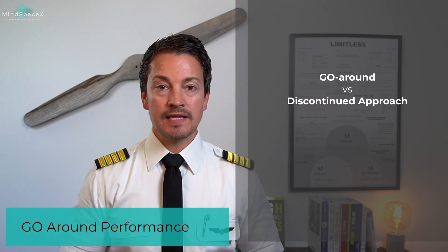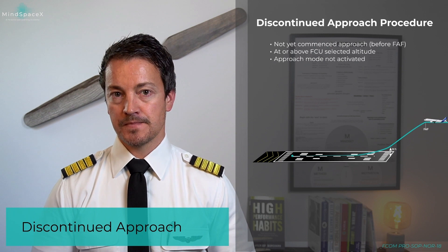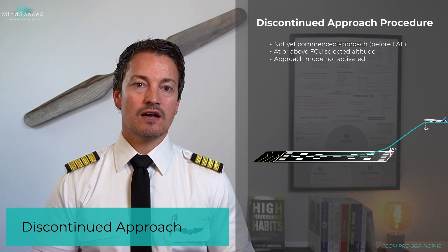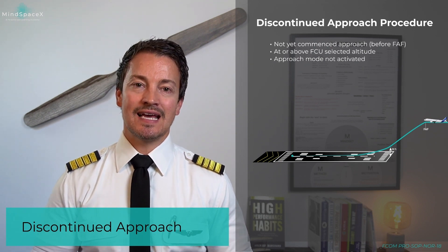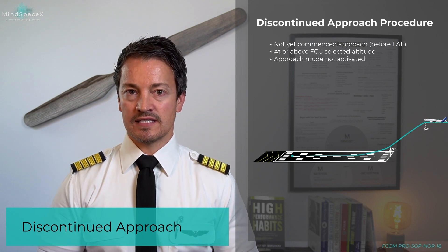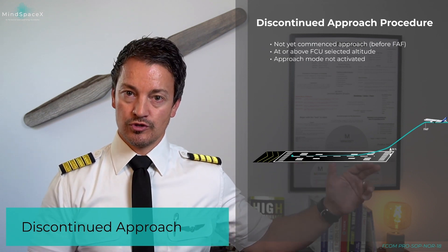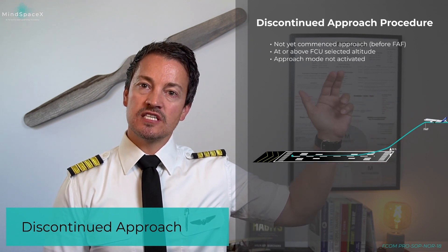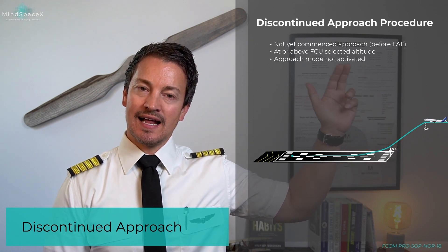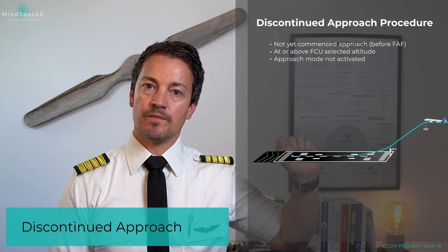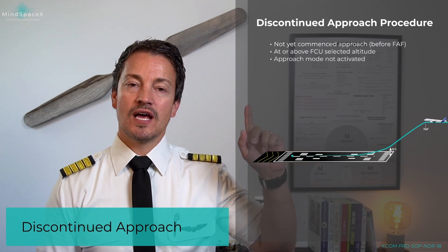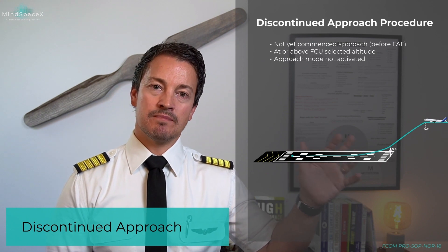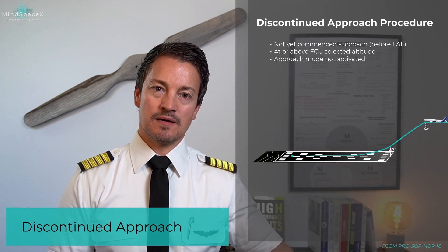They are not the same and they are not carried out the same. A discontinued approach means the aircraft has not yet started its final descent down for the missed approach point. You are currently at or above the FCU selected altitude — the altitude in your window — and the approach has not been activated and is therefore not part of the flight management system yet.